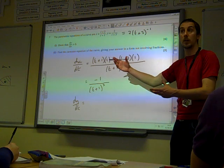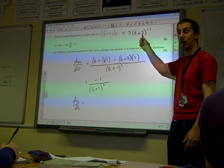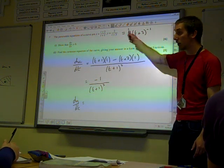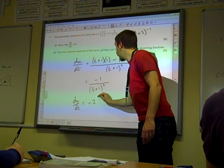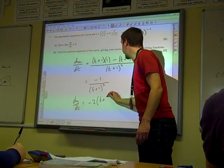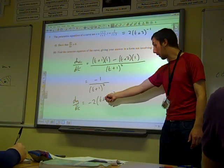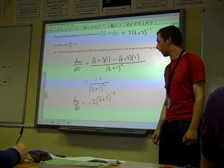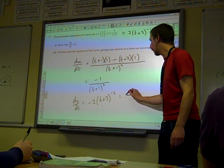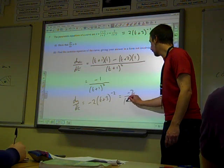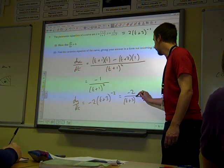If we think of it as being 2 times t plus 3 to the minus 1, at the start of the differentiation section, we wrote a rule that lets us deal with that. That's going to be minus 2 times t plus 3 to the minus 2 times by 1, times by the derivative of the inside bit. And so we've got minus 2 over t plus 3 squared.